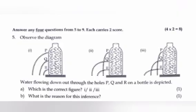Question 5. Observe the diagram. Water flowing down out through the holes P, Q and R on bottle is depicted. A. Which is the correct figure? Answer: 3.